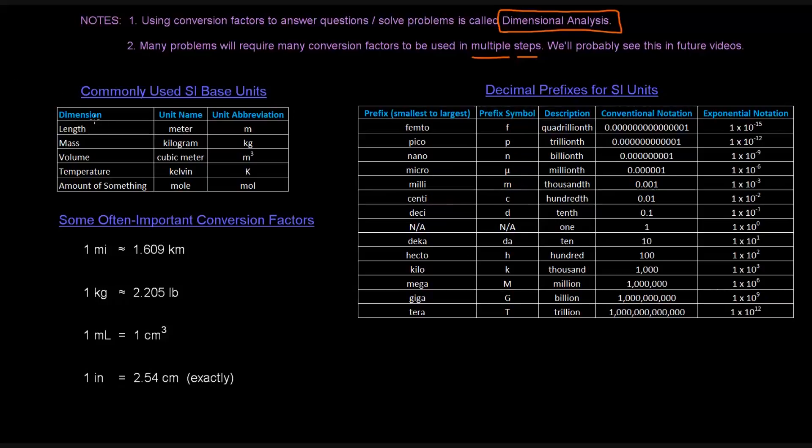I did want to note that there are some commonly used SI base units. SI stands for System International. These are the base units for each of these dimensions. Length is the meter, abbreviated M. Mass is kilogram, kg. Volume is cubic meter, meter cubed. Temperature is Kelvin. Amount of something is the mole. All this stuff is important. We'll talk more about it later.